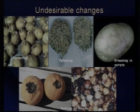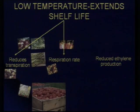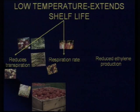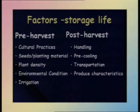We have to prevent these undesirable changes. This can be done if we can maintain proper humidity, proper temperature, and provide appropriate structures for storage of fruits and vegetables. Low temperature can extend shelf life by three ways: first, it can reduce transpiration; second, it can reduce the respiration rate; and third, the ethylene gas which is normally produced — which leads to senescence — is also washed off. So always remember that low temperature regulates respiration, transpiration, and also prevents ethylene gas production.